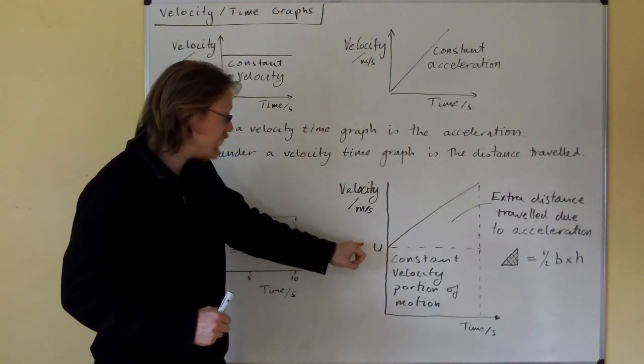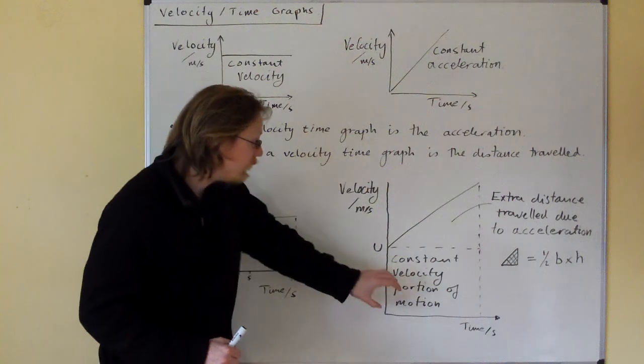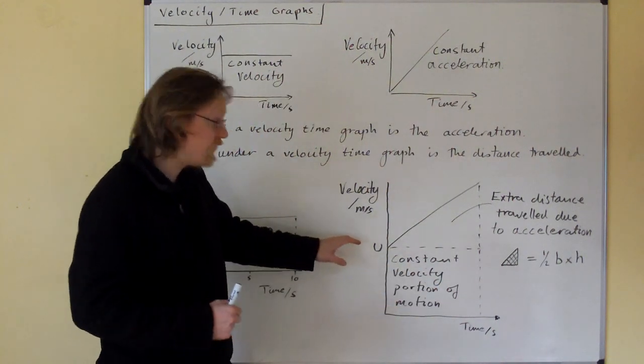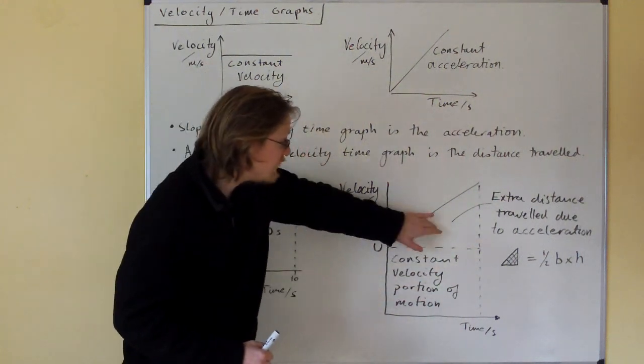Now, if we have a velocity that starts at u and then increases at a constant rate, we will have a constant velocity portion of the motion, which is as if the motion had continued on at u.